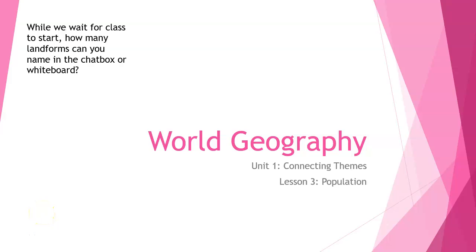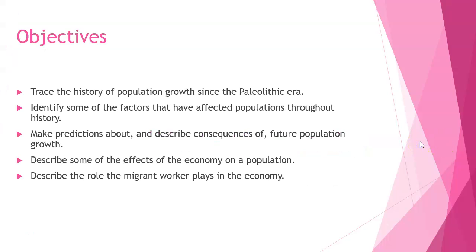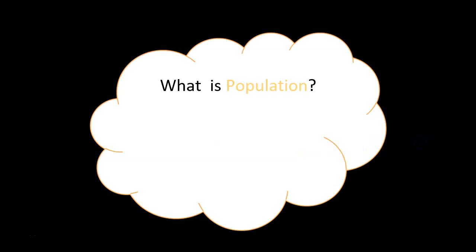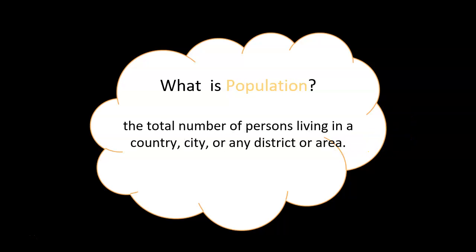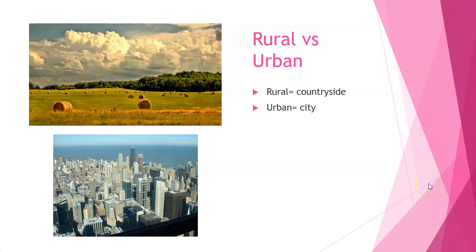This video is on lesson three, which was our population lesson. Here are our objectives. When we're talking about population, the first thing we need to do is make sure we know what the definition is. Population is the total number of persons living in a specific area — it might be a country, a state, a city, a small district. It's just that total number of people. We might also look at total world population.